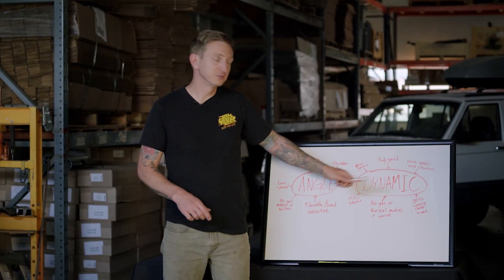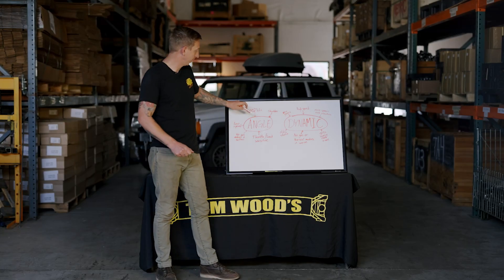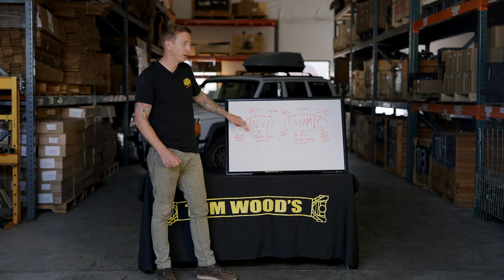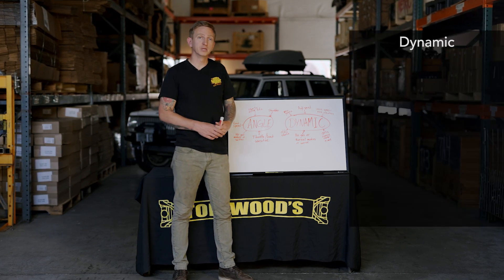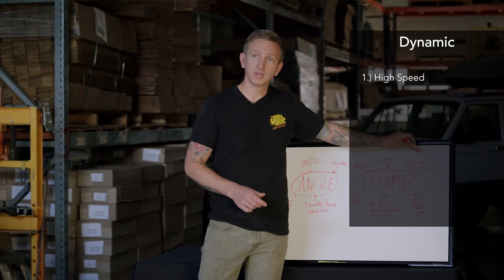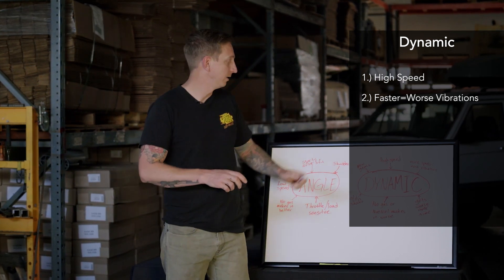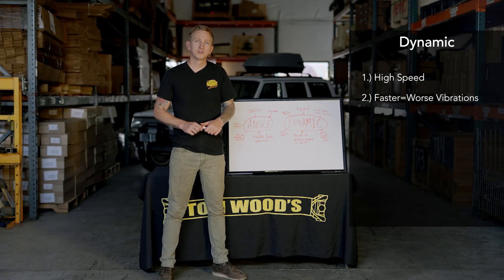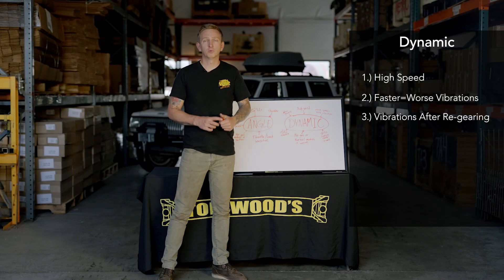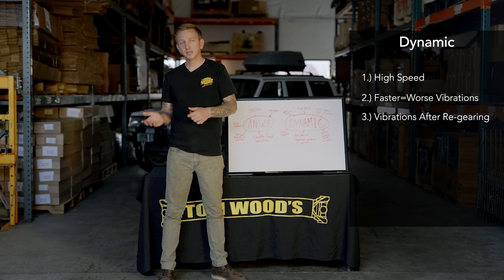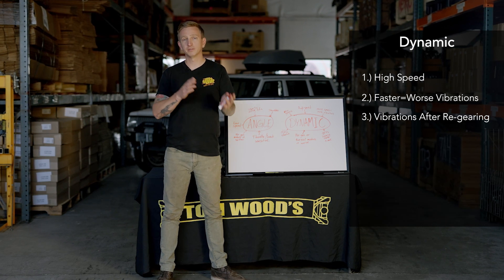Moving on to dynamic vibrations — here are some common indicators. One would be that it's more of a high speed issue. Where angle related is more low speed, maybe up to 40 miles an hour, dynamic vibration is usually a high speed issue, coming in around 50 miles an hour, and the faster you go, the worse it gets — at 60 it's worse, at 70 even worse than that. Also, if you recently installed new ring and pinion gears and developed a vibration right after, that's an indicator of a dynamic issue.